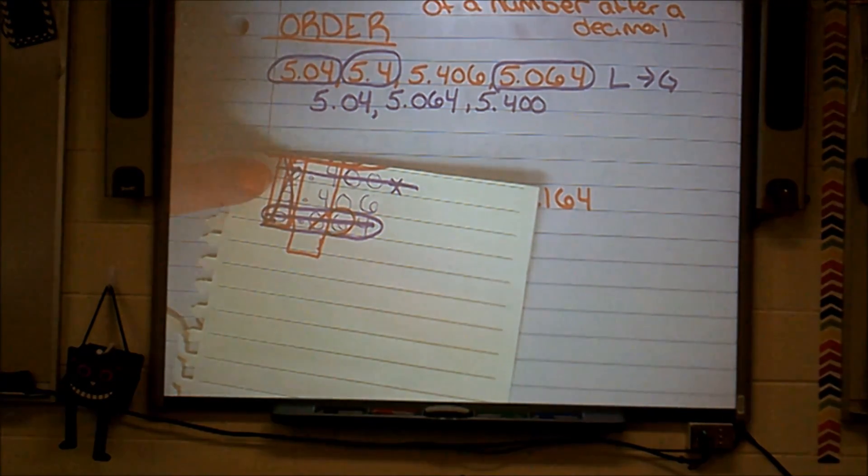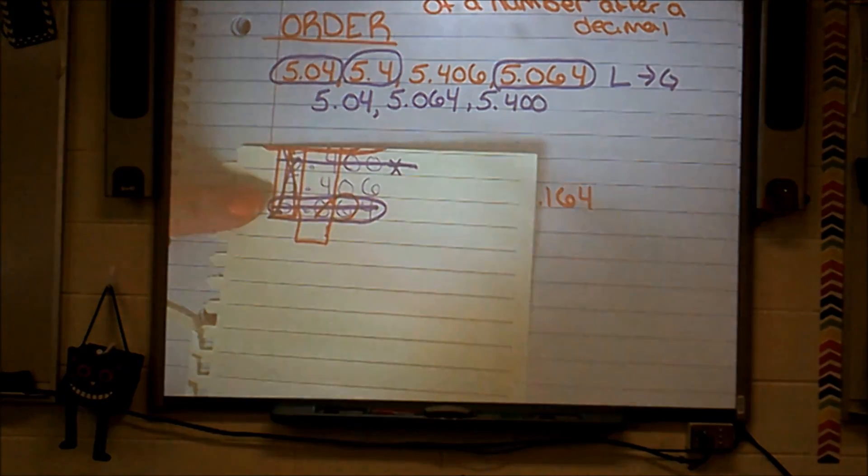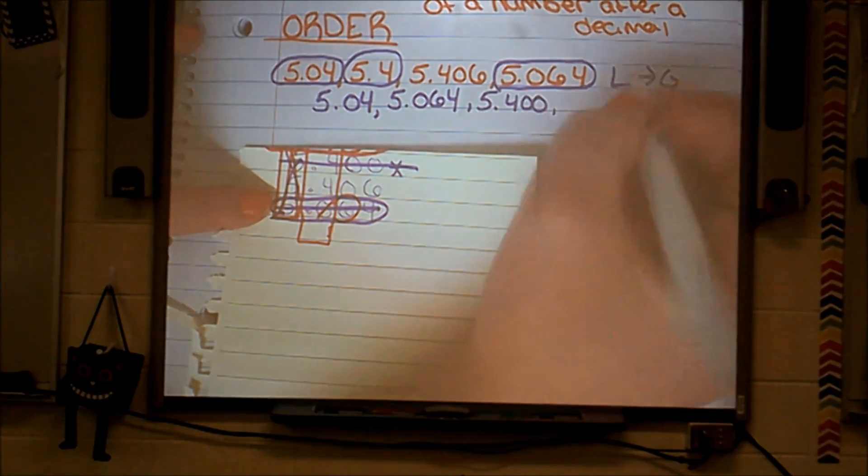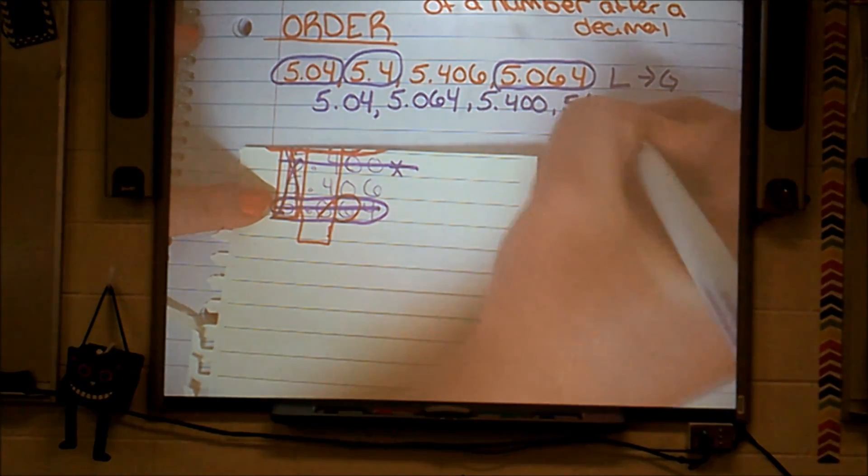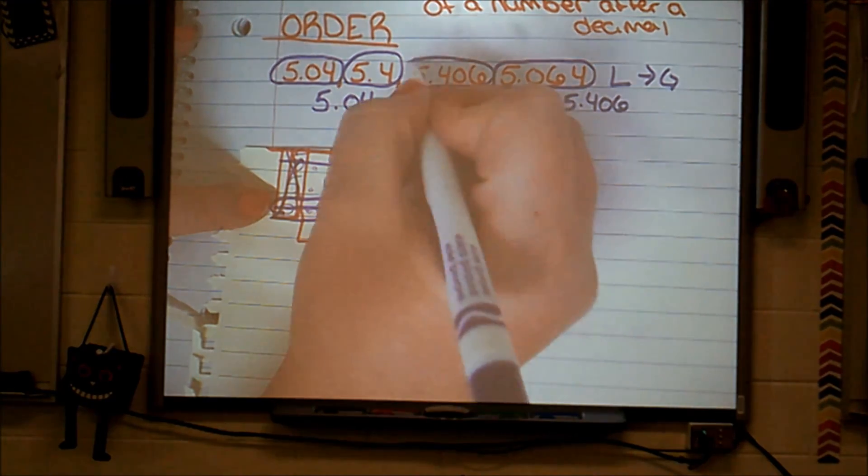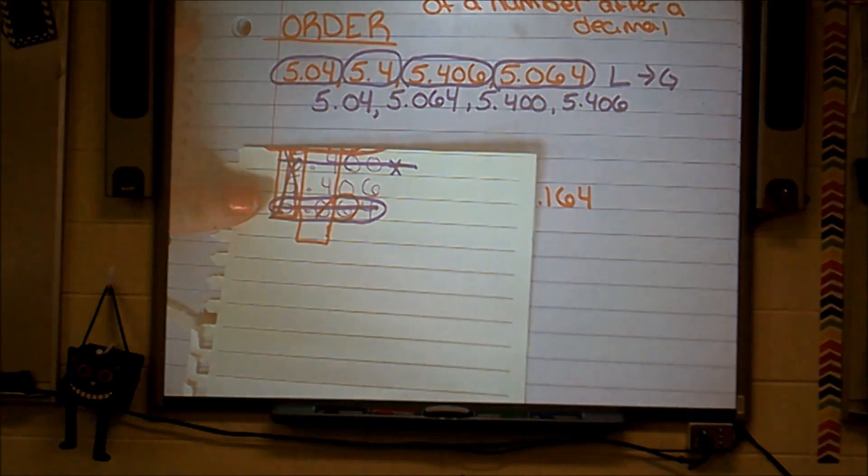So that tells me that this number is going to be my next. That means the number left must be the largest, most magnificent, greatest number on our list. Because it's the only one left. And it's the only one up here. So there are my numbers ordered from least to greatest.